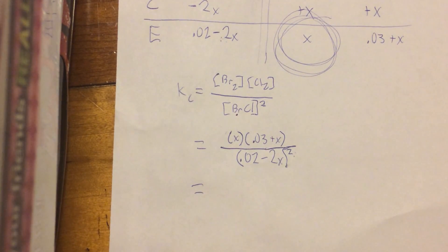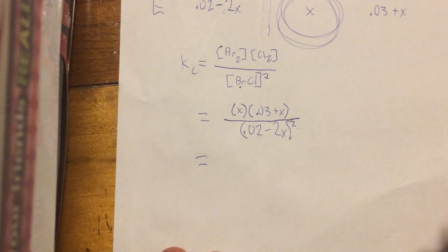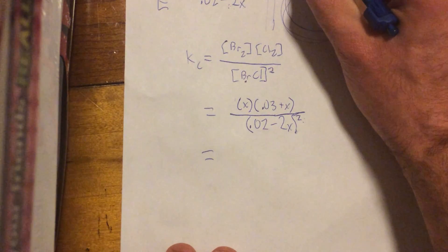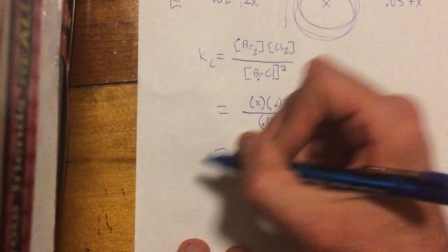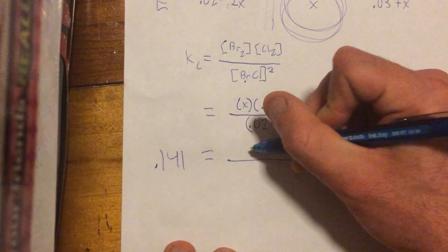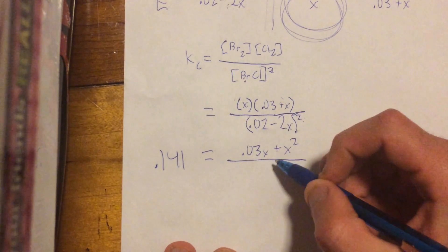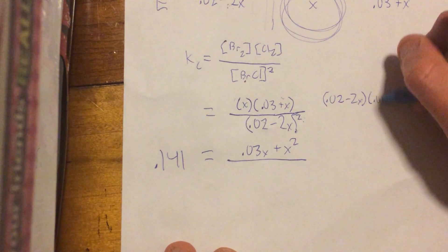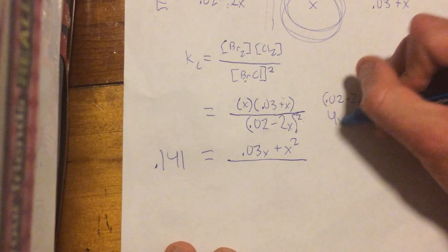All right, next, it's basically just math from here on out, so I'll just follow along with what I got. I already calculated this earlier, so I'm not just some super math genius. So, again, Kc is 0.141 right here, so we'll plug that, 0.141 equals, let's math this out, 0.03x plus x squared, and then 0.02 minus 2x, 0.02 minus 2x. That comes out to be 4x squared.